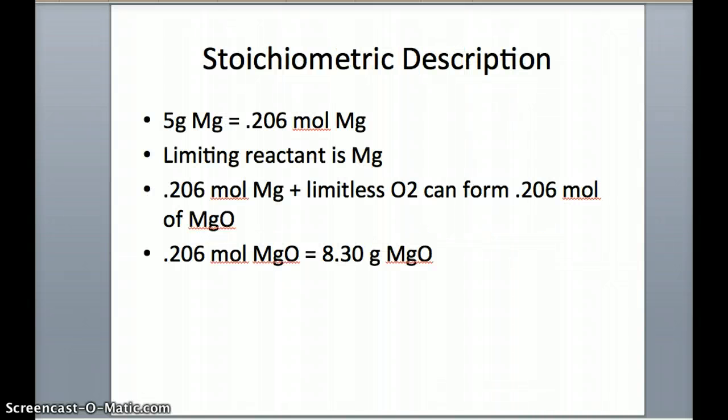You can further look into this and see that chemistry can be used to describe exactly how much magnesium oxide is obtained. When we take 5 grams of magnesium and divide it by its molar mass, we find that there's 0.206 moles of magnesium.